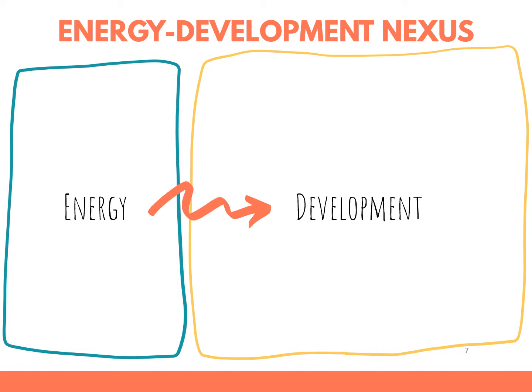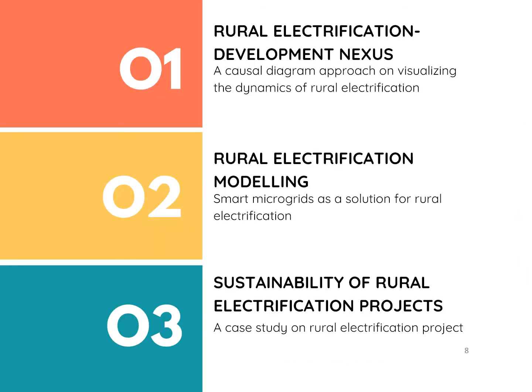That brings us to the question: how can we model rural electrification for sustainable development? In order to answer the question, we must first go through understanding the rural electrification development nexus, followed by modeling of rural electrification and visualizing it by citing rural electrification projects.